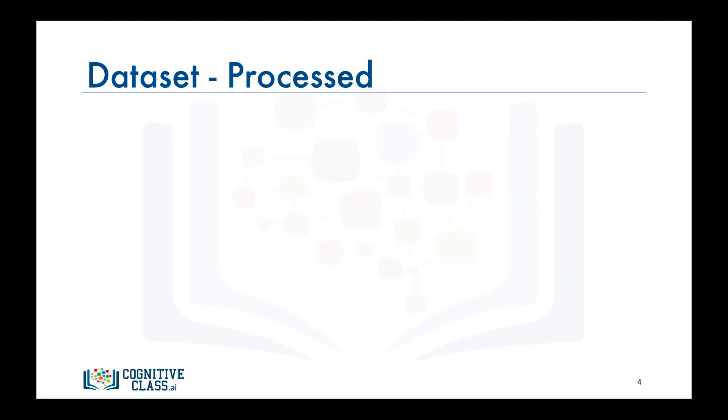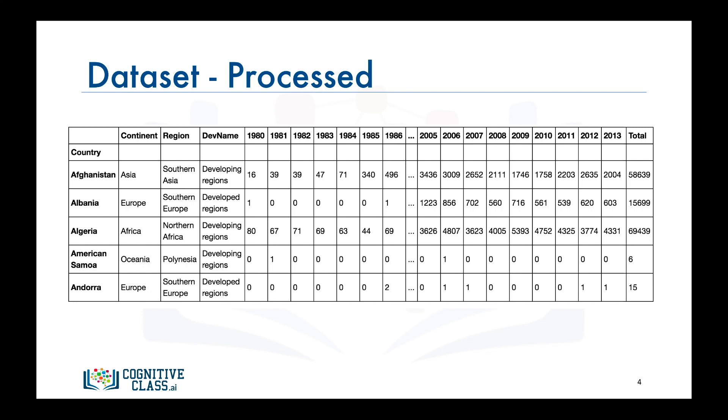Now let's process the dataframe so that the country name becomes the index of each row. This should make worrying specific countries easier. Also, let's add an extra column which represents the cumulative sum of annual immigration from each country from 1980 to 2013. So for Afghanistan, it is 58,639 total and for Albania, it is 15,699 and so on. And let's name our dataframe df_canada.